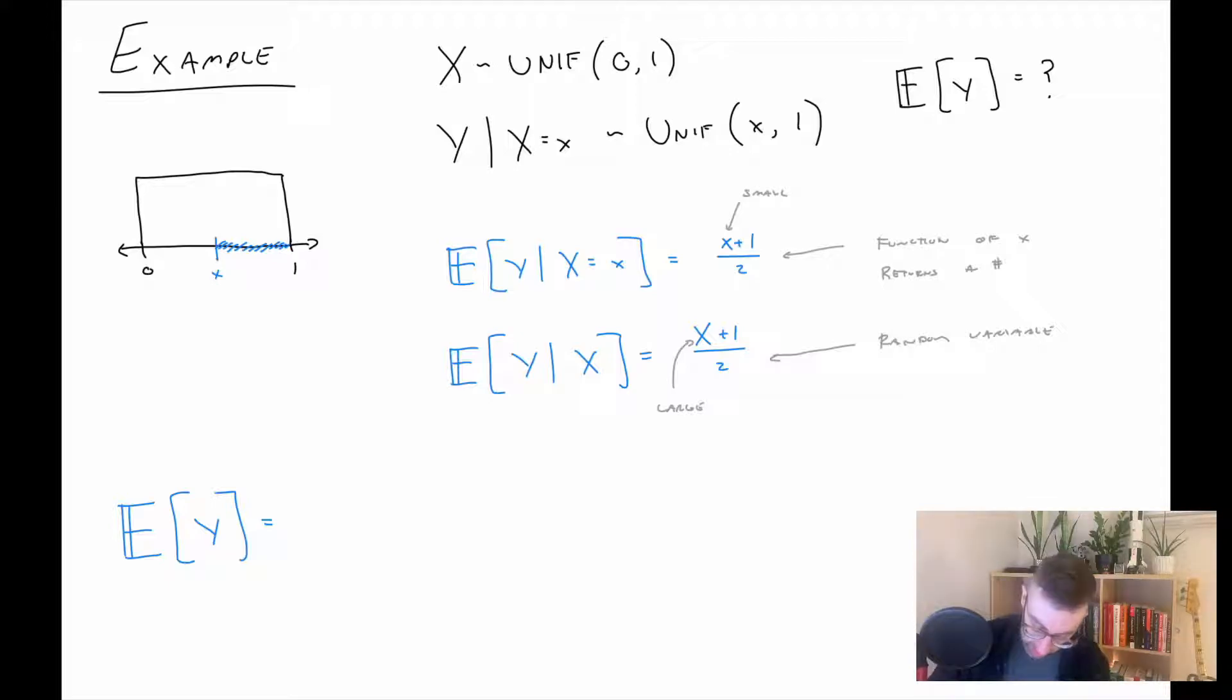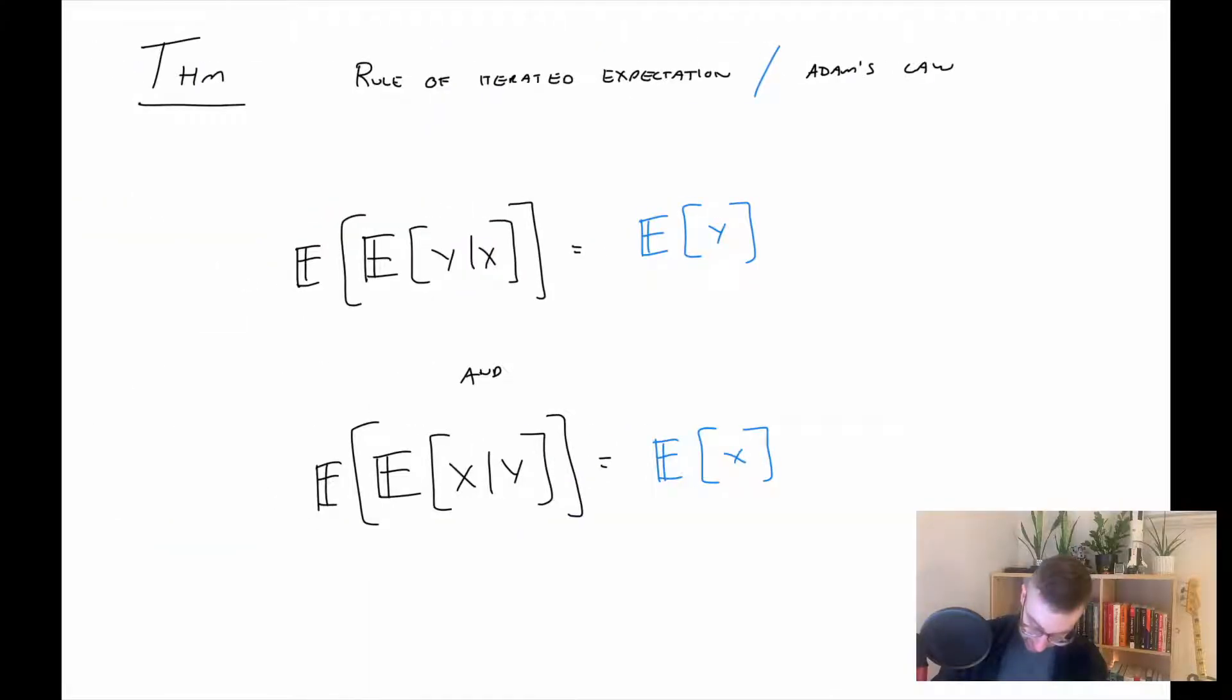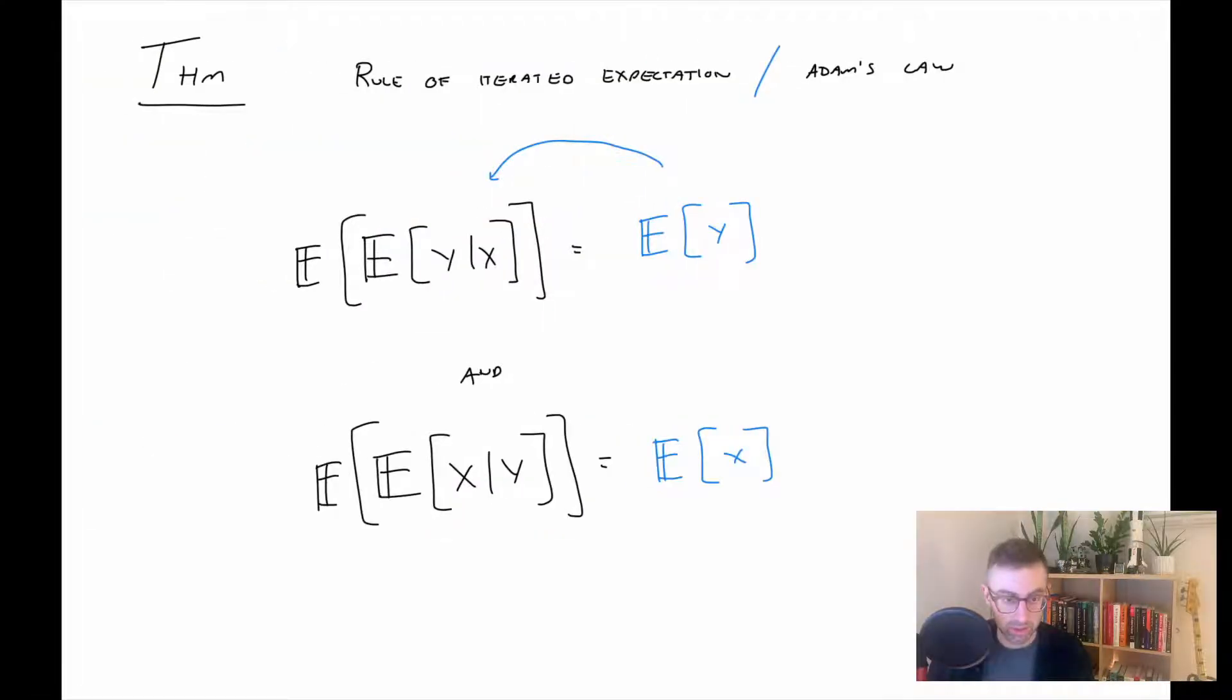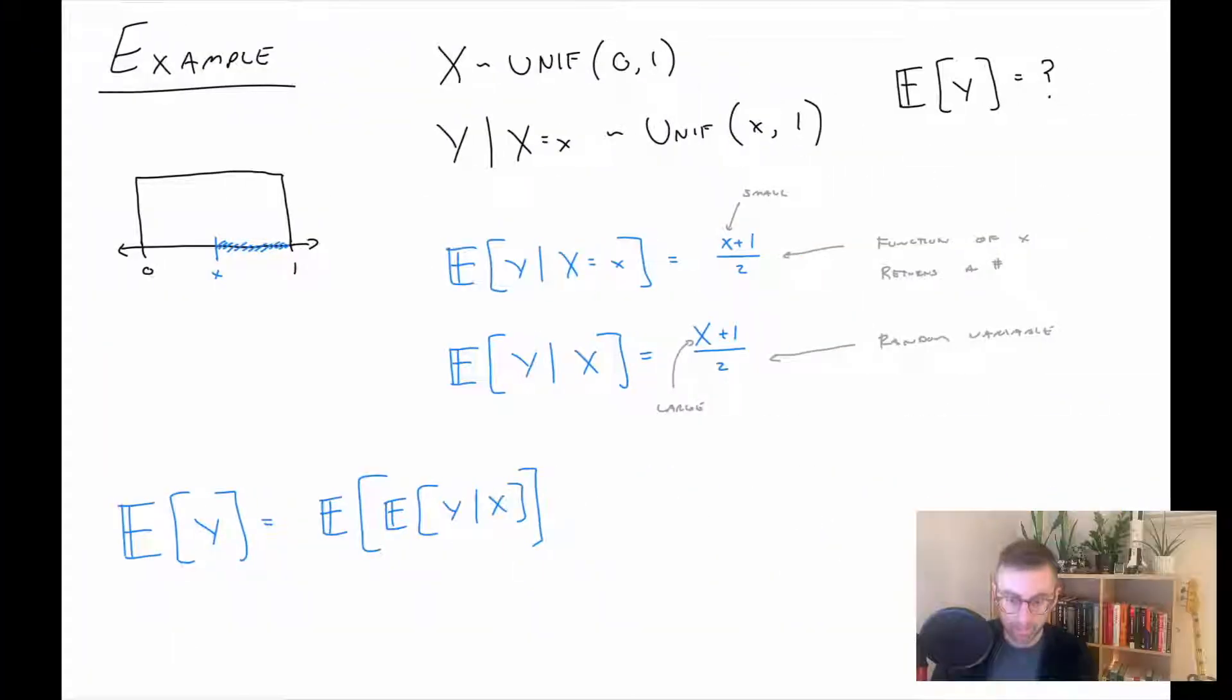So now to find the expected value of Y, well recall that we can go this direction. So this is the expected value of the expected value of Y given X. I'm using the random variable version here, which is part of the theorem.